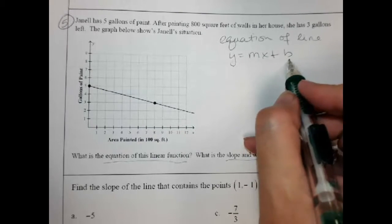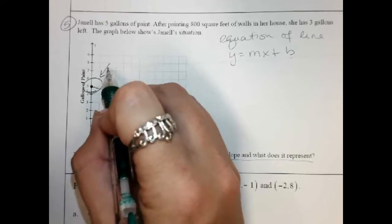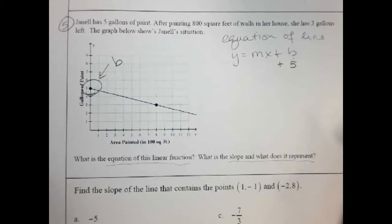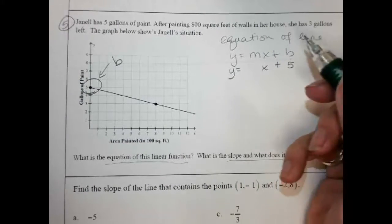So the b is really easy. It's where it crosses the y, that's right here, crosses right there at five, that's b. I just plug it in there. And the y and the x stay in my line like that and now I have to do the slope.